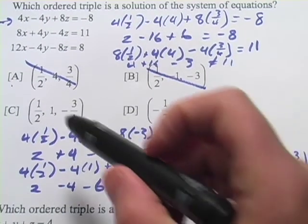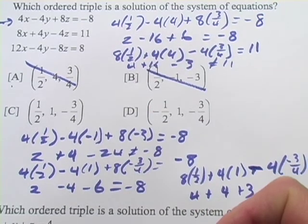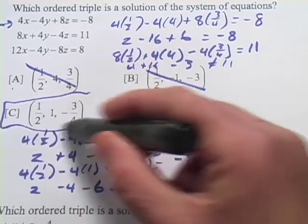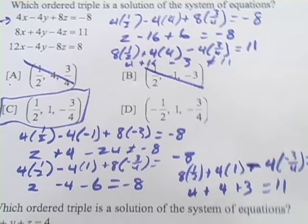And if you were to check out the last equation up here with these numbers, you'd find out it satisfies that one too. And C is going to be our answer. So that's the approach we're taking here. A little bit of work, but probably easier than trying to do the work involved in solving a system of three equations. Let's take a look at one more.